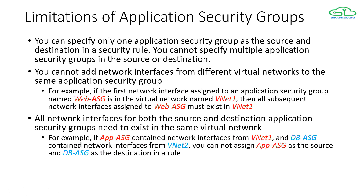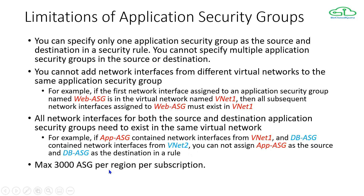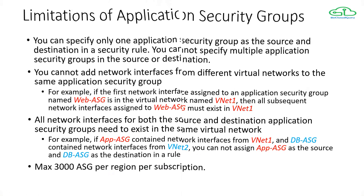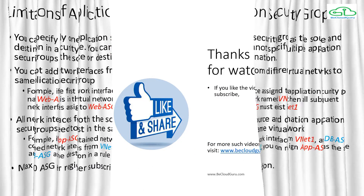All network interfaces for both source and destination application security groups must exist in the same virtual network. For example, if app ASG contains NICs from vnet1 and DB ASG contains NICs from vnet2, you cannot use app ASG as source and DB ASG as destination in the same rule — they must be in the same VNet. Finally, there is a limit of 3000 application security groups per region per subscription. That's it for today's demonstration — hope you liked it, thanks for watching.